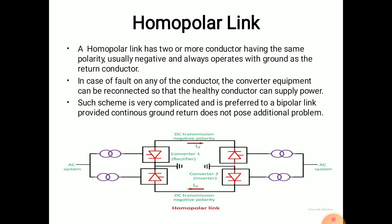The next is the Homopolar DC Link. As the name suggests, a homopolar link has two or more conductors having the same polarity. Usually, a homopolar link uses negative polarity conductors and always operates with ground as the return conductor.